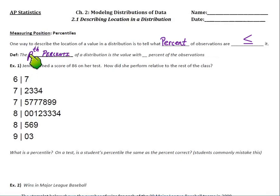So one way to describe the location of a value, a specific value in a distribution, is to tell what percent of observations are less than or equal to it. So that's the idea behind percentiles. Now, the formal definition: we say the p-th percentile of a distribution is the value with p percent of the observations less than or equal to it. That's the formal definition of a percentile.